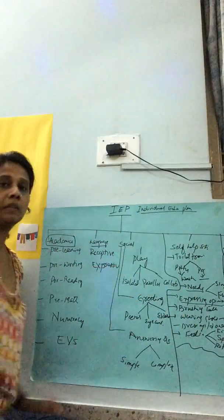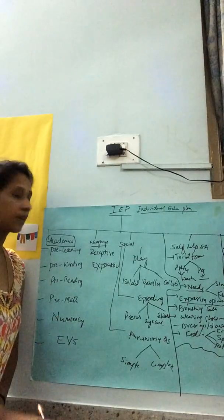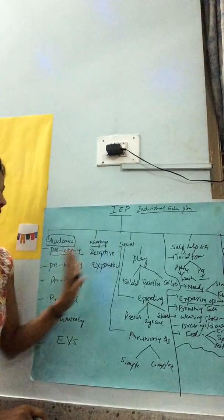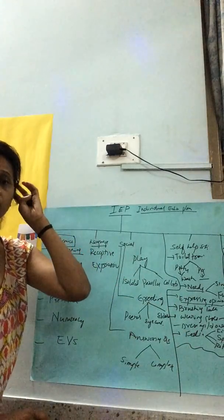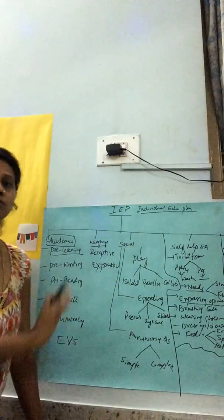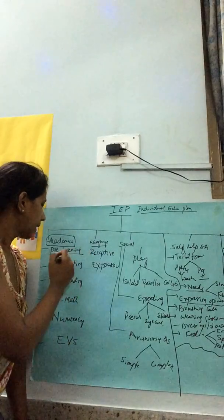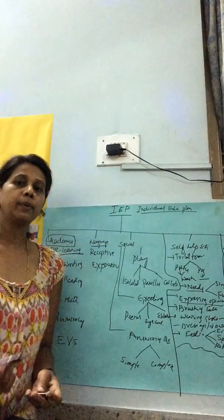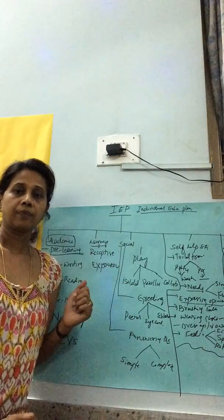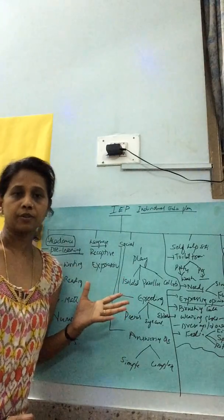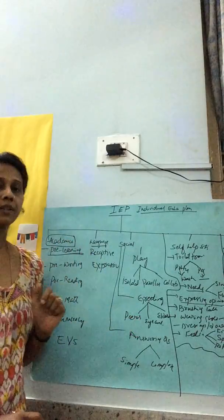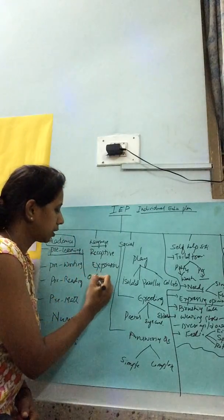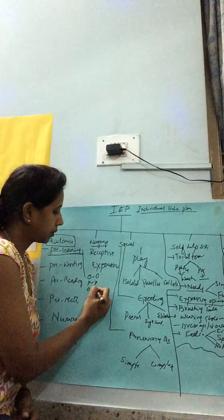Coming back to academics — under pre-learning, since I don't have enough space on the whiteboard I'll explain verbally. Pre-learning is anything that is a prerequisite to learning: matching, sorting, color recognition, shapes recognition and identification. We start with matching — object to object, picture to picture, then object to picture.